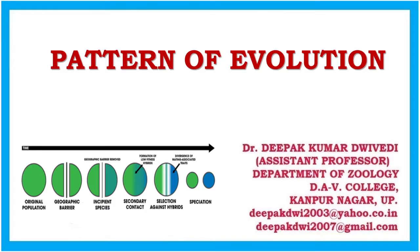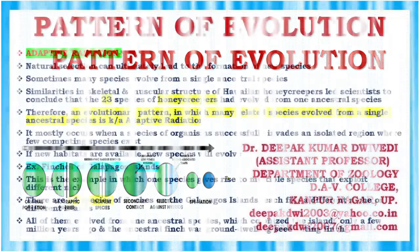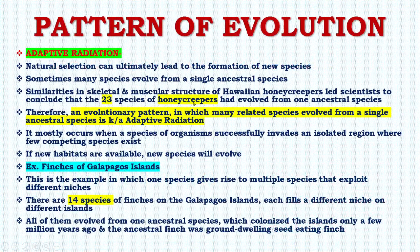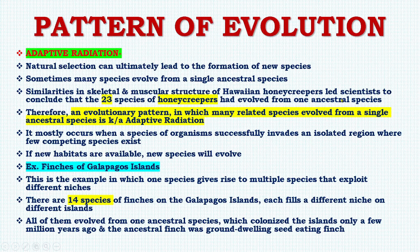Today we will study the important topic of evolution, specifically patterns of evolution. The first important pattern is adaptive radiation. Natural selection can ultimately lead to the formation of new species — sometimes many species evolve from a single ancestral species. Similarities in skeletal and muscular structure of Hawaiian honeycreepers led scientists to conclude that 23 species had evolved from one ancestral species. Adaptive radiation is an evolutionary pattern in which many related species evolve from a single ancestral species.